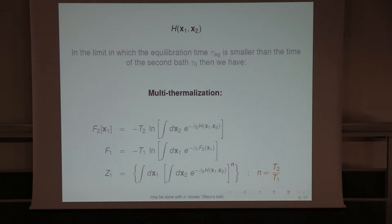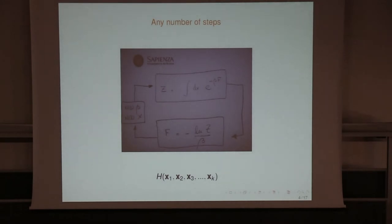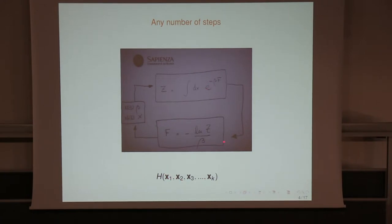This has not been implemented as far as I know. You can do it with more — calculate the partition function with one variable, integrate it away with a Gibbs measure, obtain a new free energy with a new temperature, then integrate over a second variable and so on. You get Gibbs within Gibbs within Gibbs to any number — not bi-thermalize, but multi-thermalize.